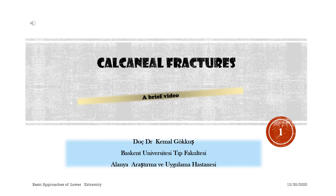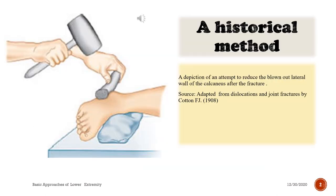Calcaneal fractures — a brief video. A historical method: a depiction of an attempt to reduce the blown-out lateral wall of the calcaneus after fracture. Adapted from 'Dislocations and Joint Fractures' by Cotton F.J., 1908.